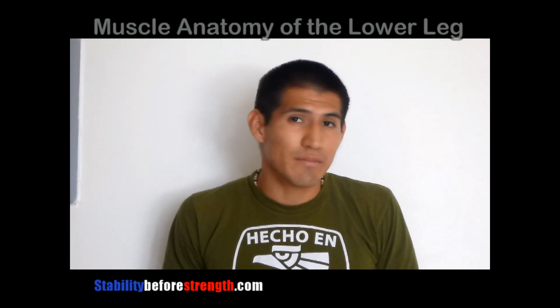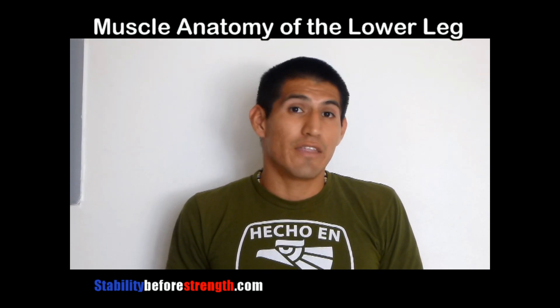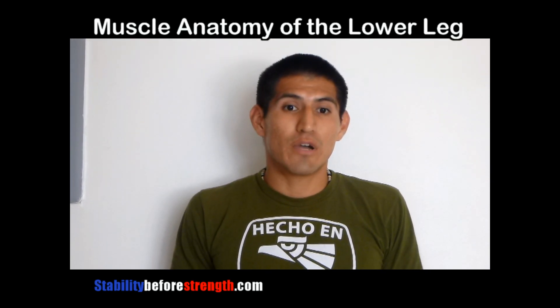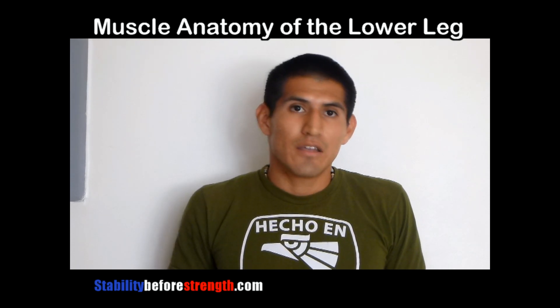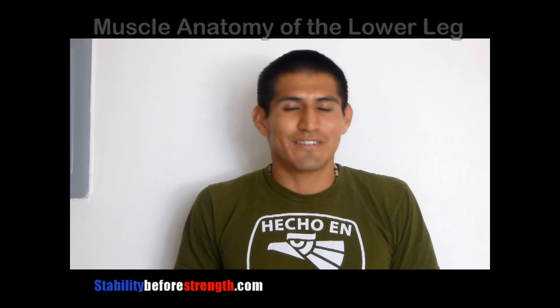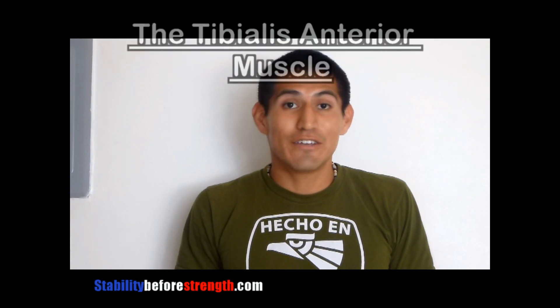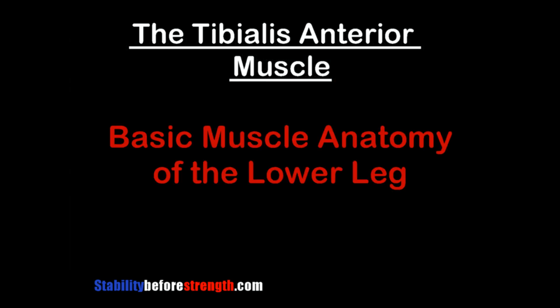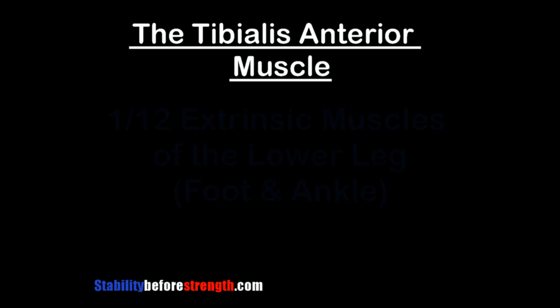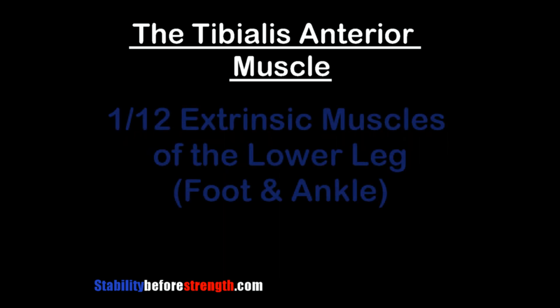Today we are going to go over basic muscle anatomy of the lower leg, and the first muscle I want to start with is called the tibialis anterior. The tibialis anterior is part of a group of muscles called the extrinsic muscles of the lower leg. It is one of 12 muscles that make up the extrinsic muscles of the foot and ankle.